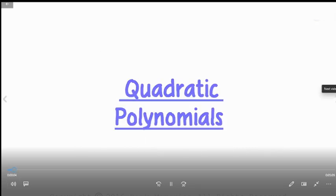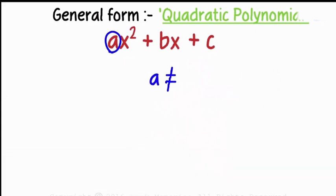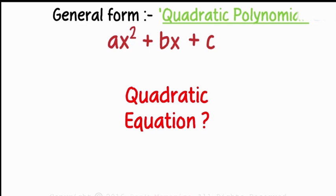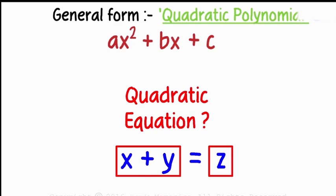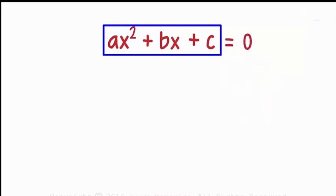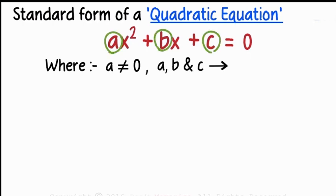The general form of a quadratic polynomial is ax² + bx + c, where a is not equal to 0, which is the coefficient of x², and the degree is 2. We can also write the standard form of a quadratic equation as ax² + bx + c = 0, where a is not equal to 0, and a, b, and c are real numbers.